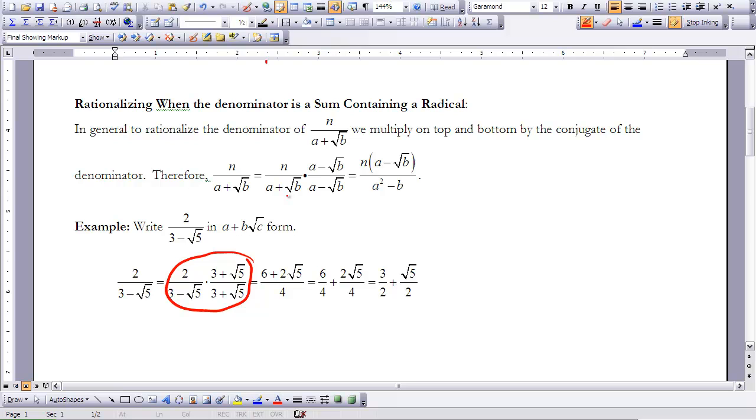Now remember, this is 3 times 3 is 9, this is plus 3 root 5 and then minus 3 root 5, and then this would be minus 5, because a negative square root of 5 times a positive square root of 5 is going to be a negative 5. Remember, this cancels out, that's why we use the conjugate. So then 9 plus a negative 5 would give me 4.